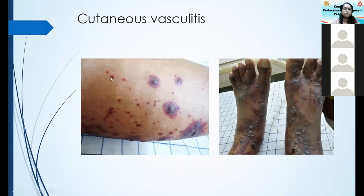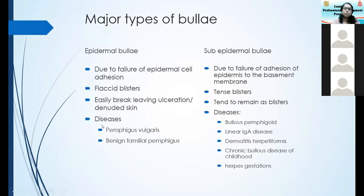Cutaneous vasculitis usually presents as non-blanching erythema, palpable purpura, but if it is very severe they may present with hemorrhagic or blistering lesions. Coming to autoimmune blistering — there are two types: epidermal bullae and sub-epidermal bullae. Epidermal bullae will lead to flaccid blisters which usually break leaving ulceration. Sub-epidermal bullae will be tense and are likely to remain as blisters — you may see them even four or five days after eruption.